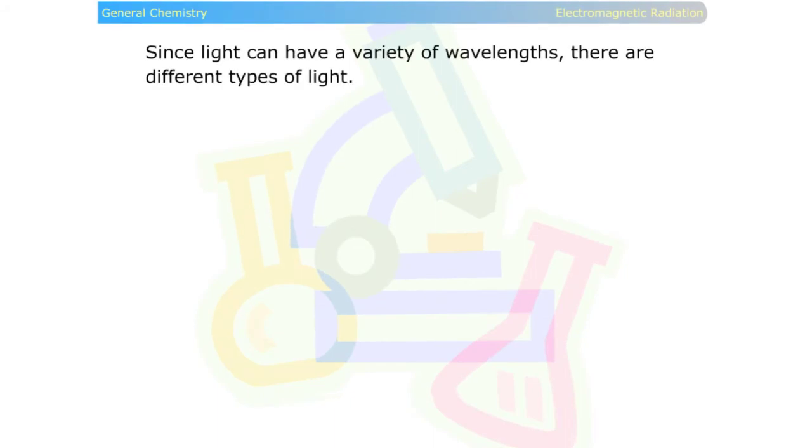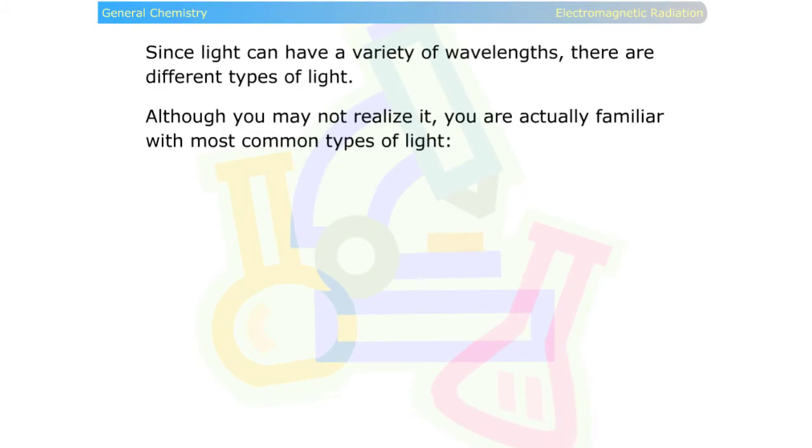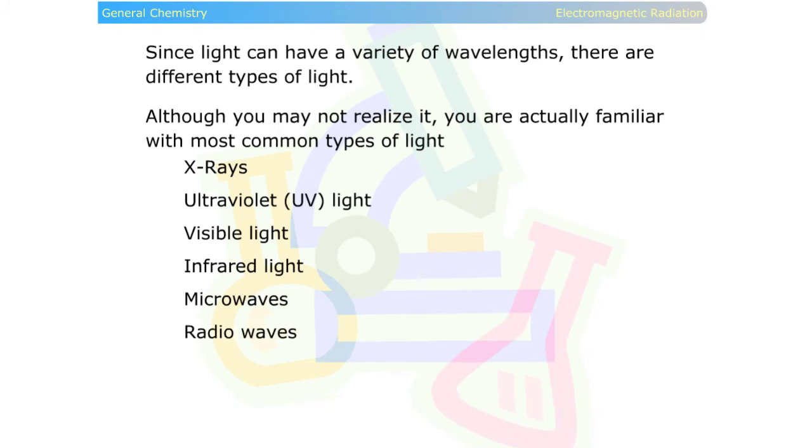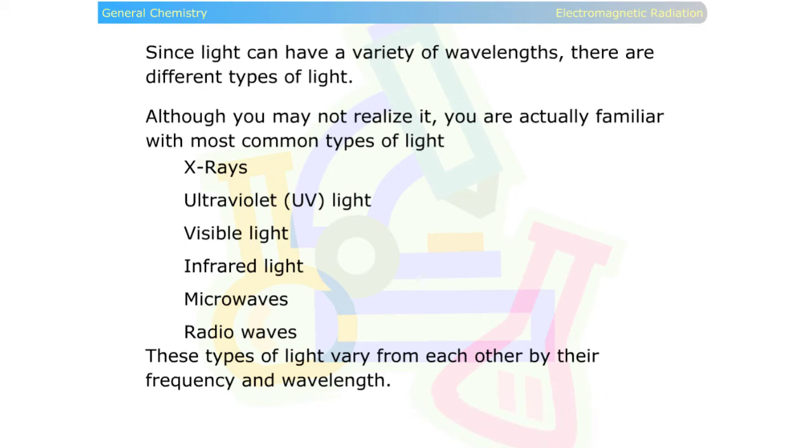Since light can have a variety of wavelengths, there are different types of light. Although you may not realize it, you are actually familiar with most common types of light: x-rays, ultraviolet light, visible light, infrared light, microwaves, and radio waves. These types of light vary from each other by their frequency and wavelength.